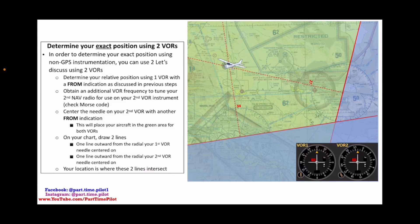So you'll draw these two lines out from your VORs and you'll draw them in pencil using your plotter on your map. And draw these two lines out until they intersect. And your location is where these two lines intersect. So let's do an example.